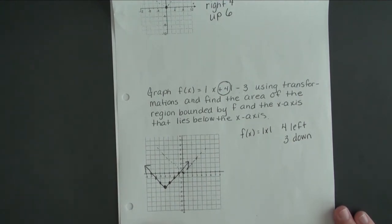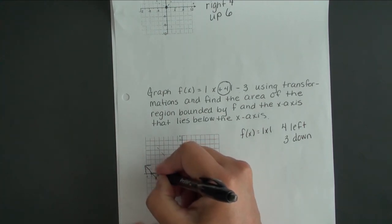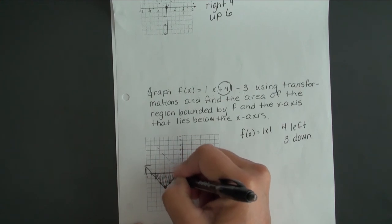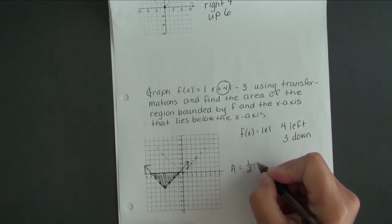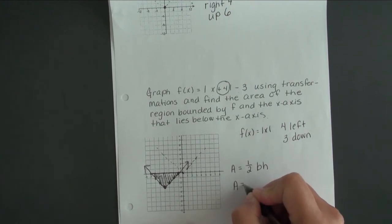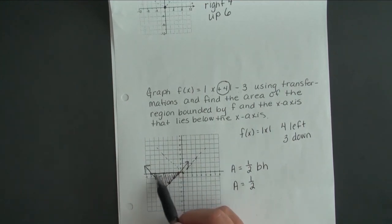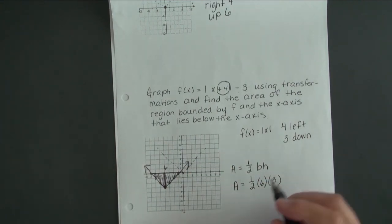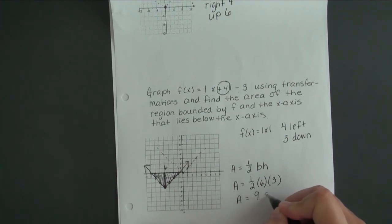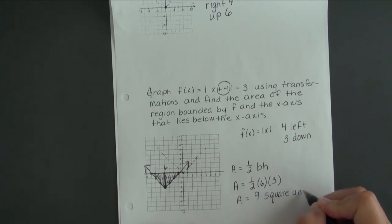Now we want to find the area of the region bounded by the function and the x-axis that lies below the x-axis. Here's my x-axis, here's my function—I want to find the area of that triangle. You'll need to know that the area of a triangle is one-half the base times the height. Our base is the bottom of the triangle—this is kind of flipped over, and that length is 1, 2, 3, 4, 5, 6. The height is this length right here, which is 1, 2, 3. We multiply one-half times 6 times 3 and we get 9. So our area is 9 square units.